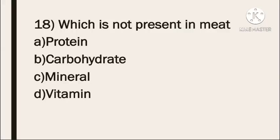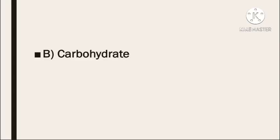Next question: which of the following is not present in meat? Option A: protein. Option B: carbohydrate. Option C: mineral. Option D: vitamin. The correct answer is carbohydrate — carbohydrate is not present in meat.